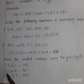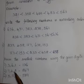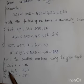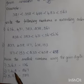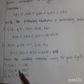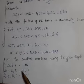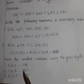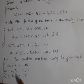Next, given digits: 7, 4, 2. Students, which is the smallest number? Number 2. First we write number 2, next 4, next 7. So 247 is the smallest number.